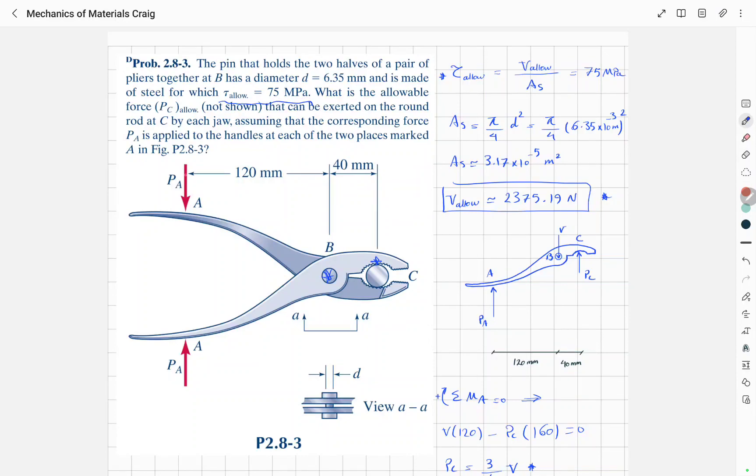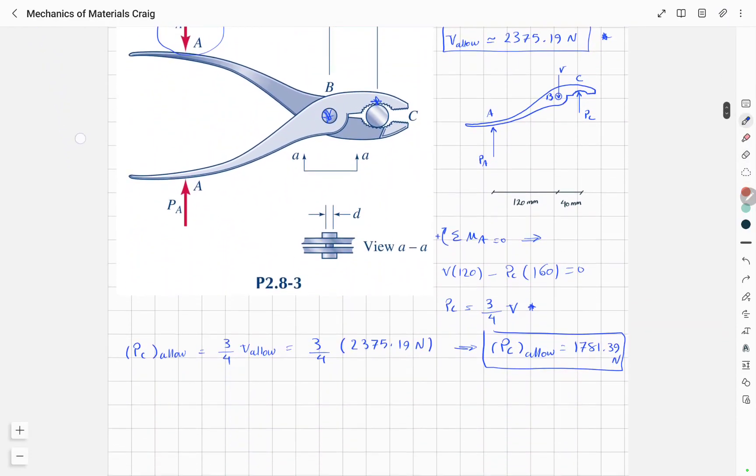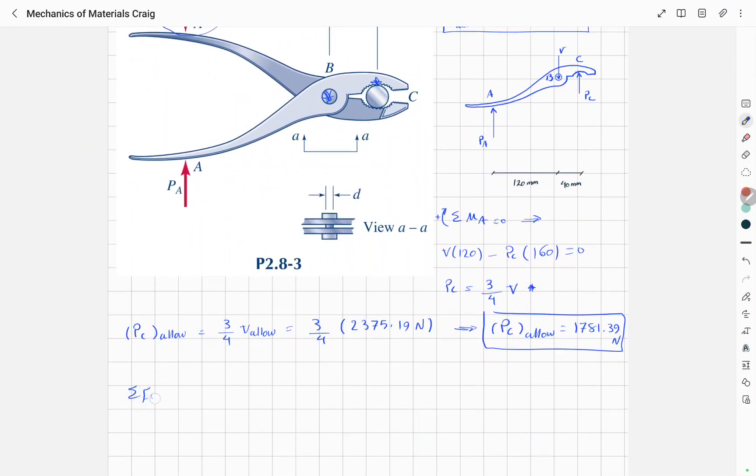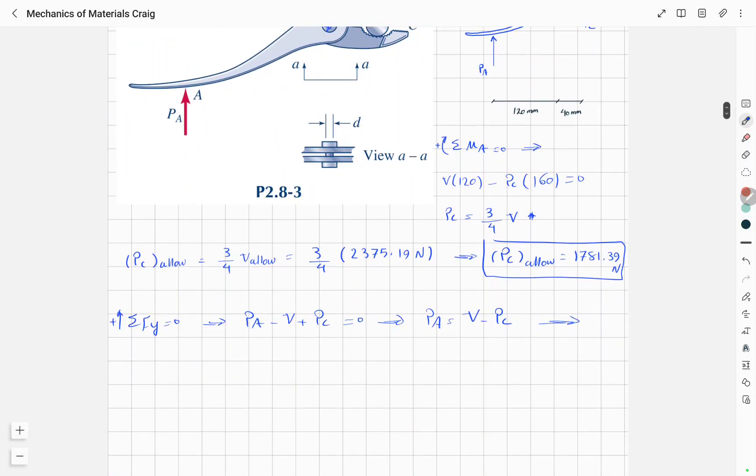Now as an extra step, if we want to know how much force can be applied to the handles of these pliers, we can say sigma Fy in this direction is equal to zero. So Pa minus V plus Pc is equal to zero, so Pa would be V minus Pc.